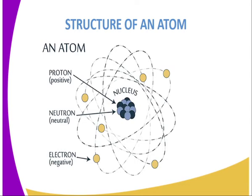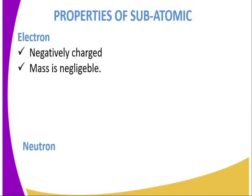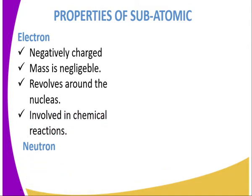An atom is made up of subatomic particles: proton, neutron, and electron. What are some of the properties of these subatomic particles? A proton is positively charged. A neutron is neutral and therefore has no charge. An electron has a negative charge. Further, the electron's mass is negligible — almost equivalent to zero. It revolves around the nucleus in a region referred to as the energy level, and electrons are involved in chemical reactions.